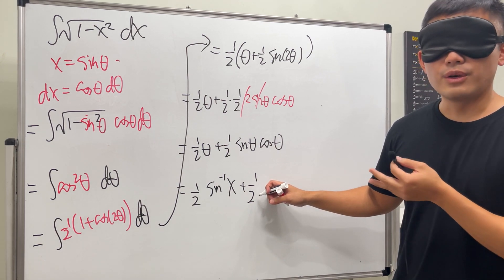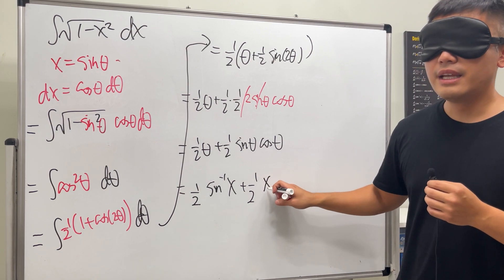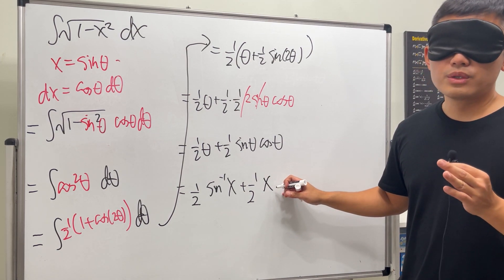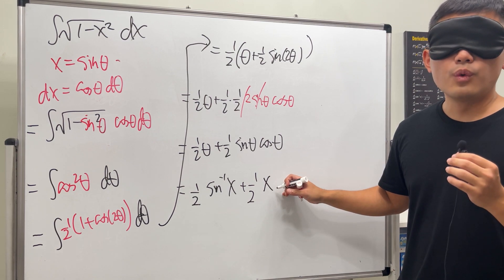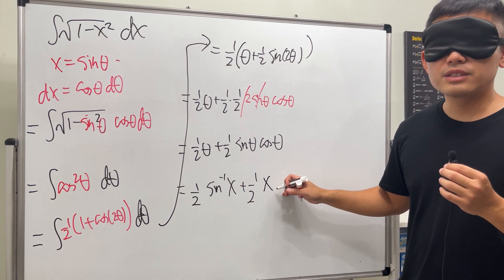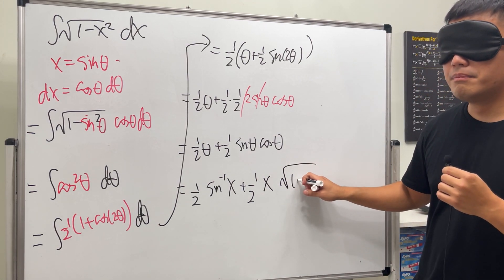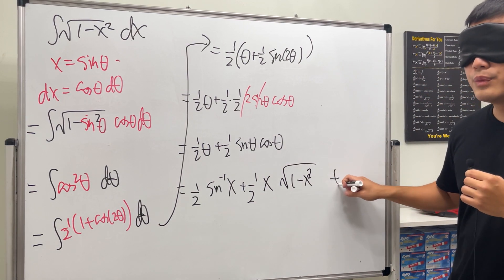X is equal to sine theta, so sine theta is equal to x. This is x. And then cosine theta—well, cosine theta is the same as square root of one minus sine squared, because we used it over there, right? So this is just going to be square root of one minus x squared, and then we're done.